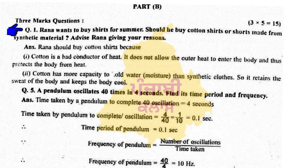Part B. Three marks questions. Question number one: Rana wants to buy a shirt for summer. Should he buy a cotton shirt or a shirt made from synthetic material? Advise Rana giving your reasons. Rana should buy a cotton shirt because: number one, cotton is a bad conductor of heat — it does not allow outer heat to enter the body. Number two, cotton has more capacity to hold moisture than synthetic clothes, so it retains sweat and keeps the body cool.